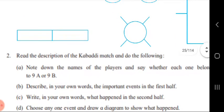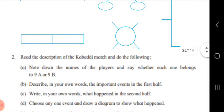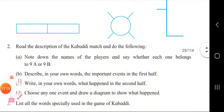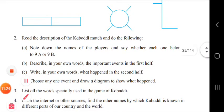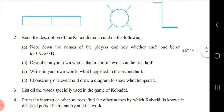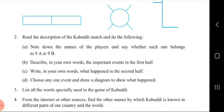Now note down the names of the players and say whether each one belongs to 9th A or 9th B. Players for 9th A are: Govind, Mangesh, Soham, and Vivek. Players for 9th B are: Suresh, Ravi, Mohan, Vinod, Ajinkya, and Mihir.